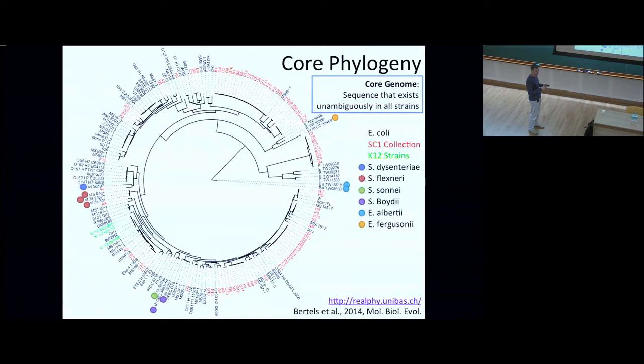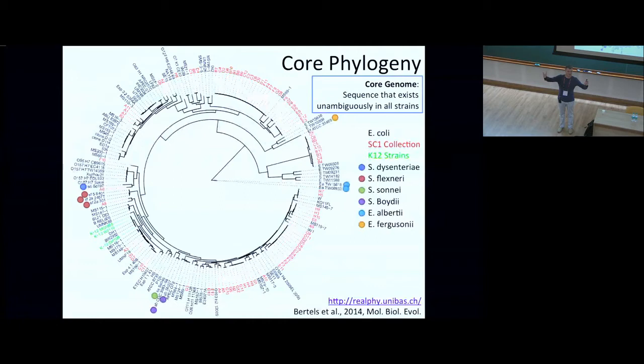Every one of the wells on this plate had an E. coli that was different from every other well — no strain occurred twice. That means the diversity in this region is very high. If one strain were responsible for 10% of all E. coli there, we would have seen it more than once. This says no E. coli strain is present at more than about one percent.